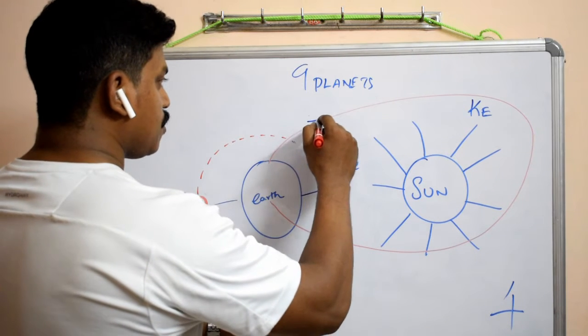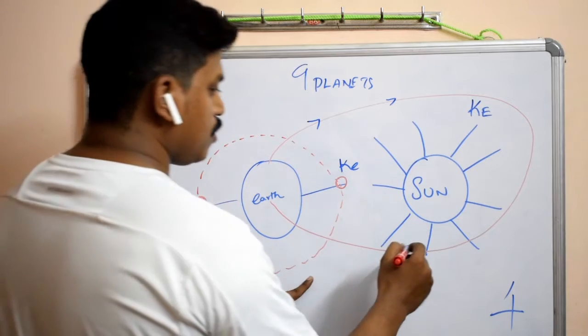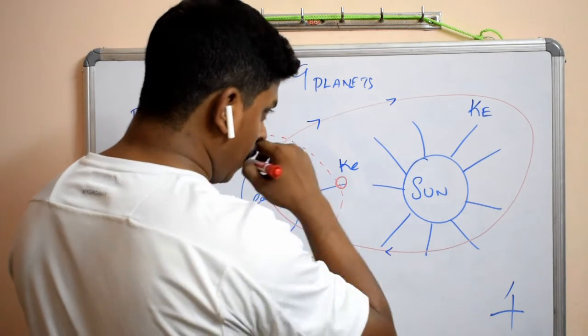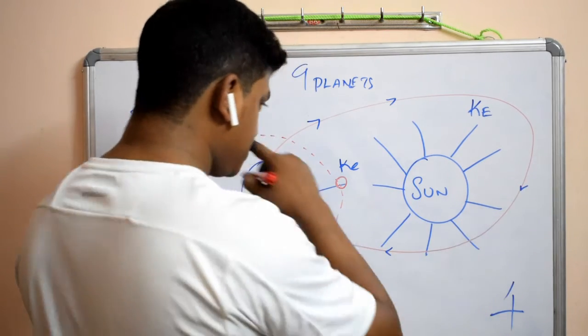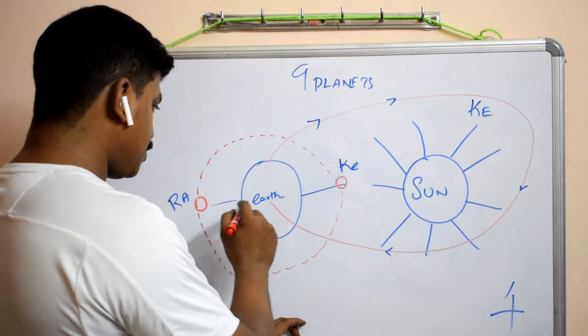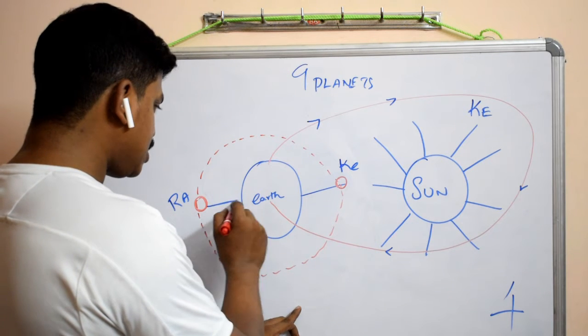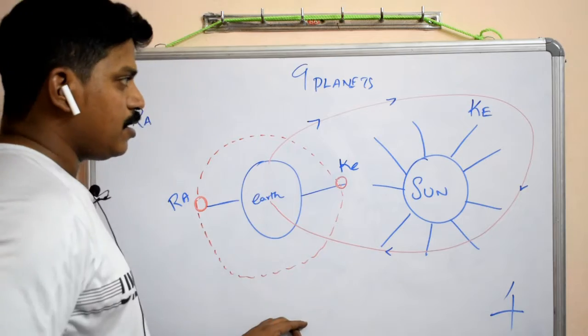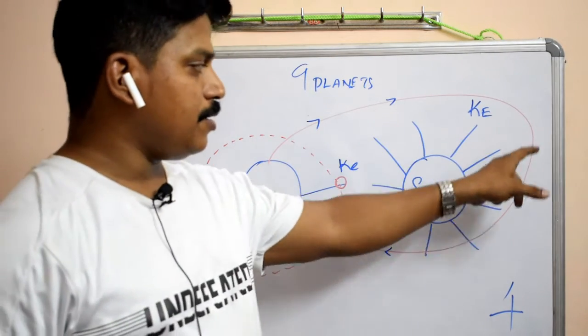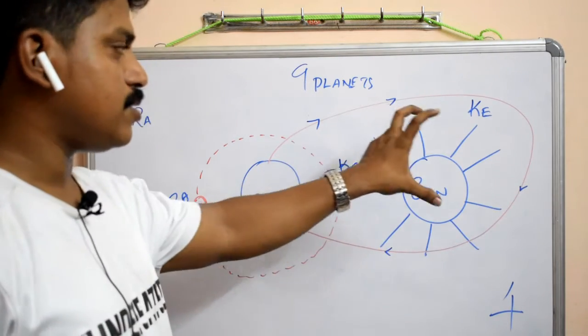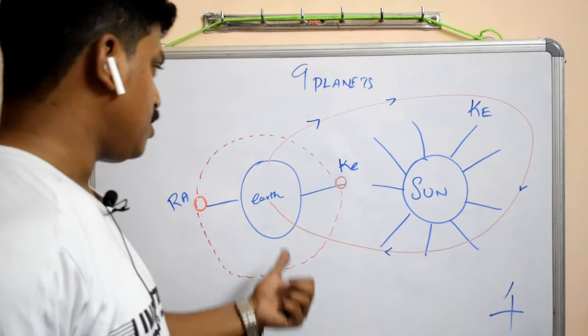Earth rotates like this, it rotates the sun. When it is getting rotated, there is an axis point in the center of the Earth. This is an arbitrary motion, it is not an exact circle, it is not getting rotated.